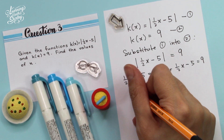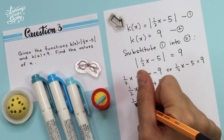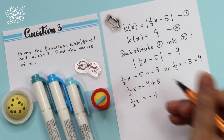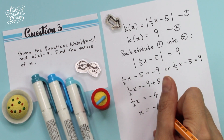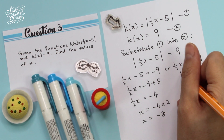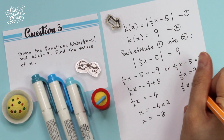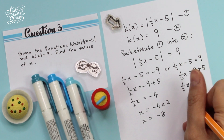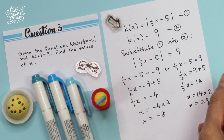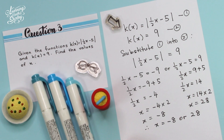We solve these separately. For the first case: half x equals negative 9 plus 5, so half x equals negative 4, then x equals negative 4 multiplied by 2, giving x equals negative 8. For the second case: half x equals 9 plus 5, so half x equals 14, then x equals 14 multiplied by 2, giving x equals 28. Therefore, x equals negative 8 or 28. This is the answer.